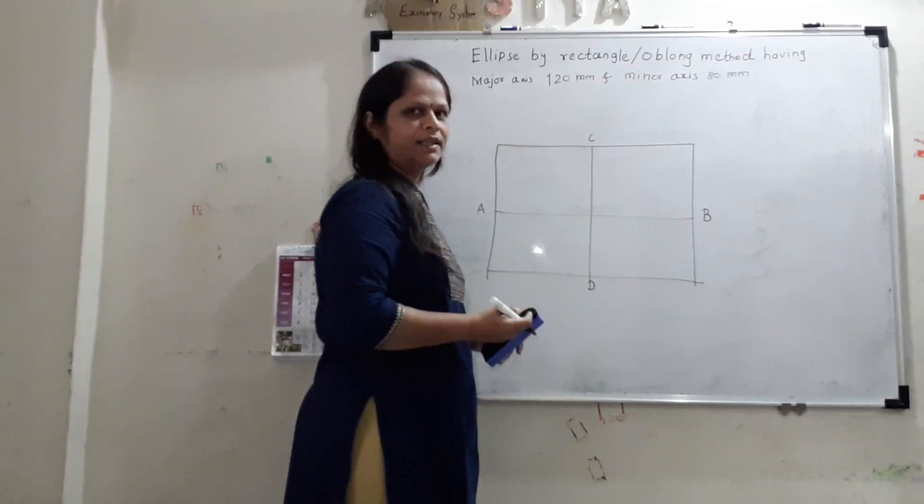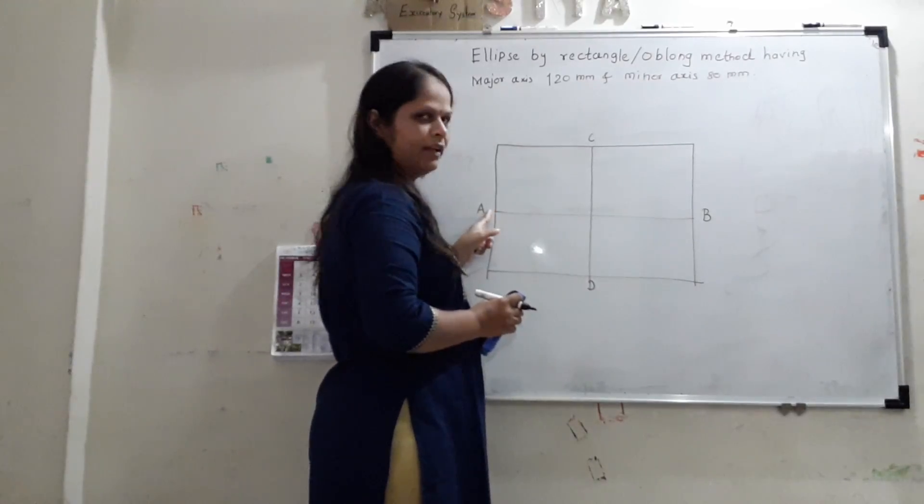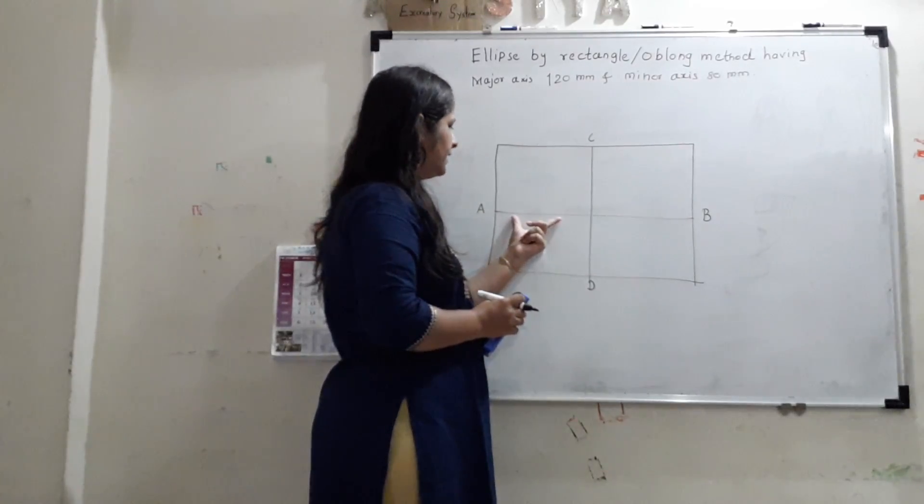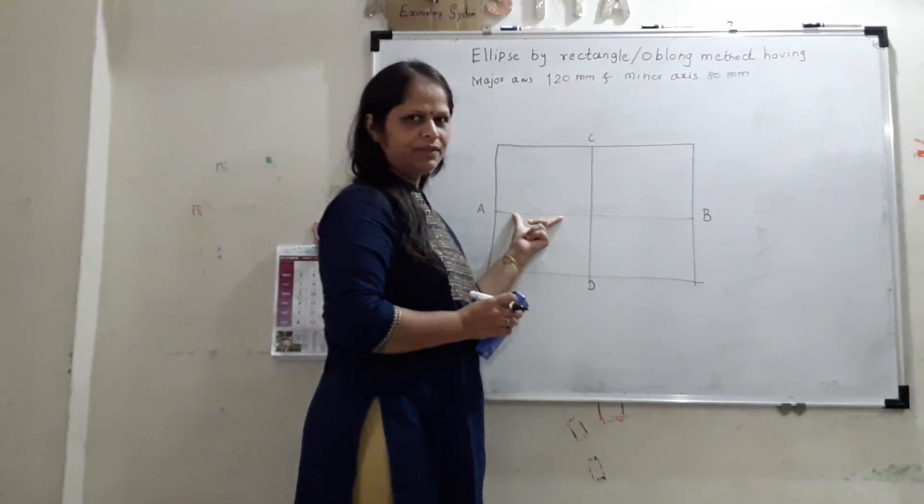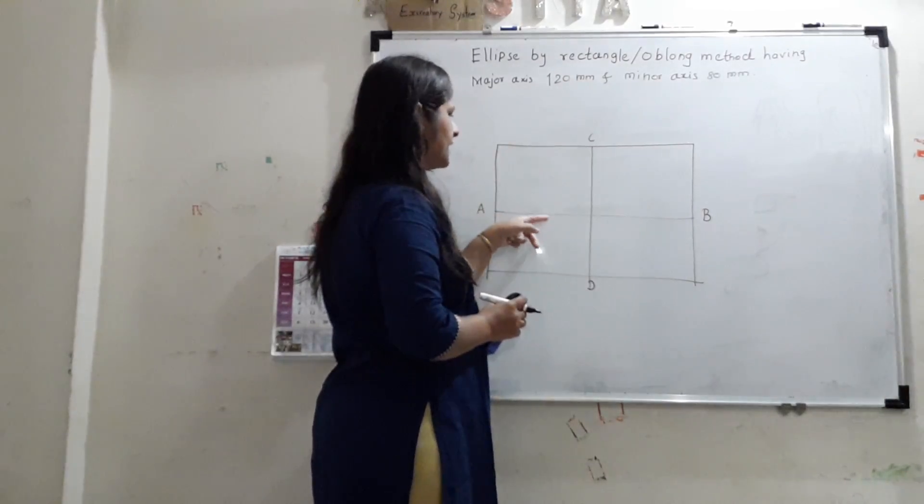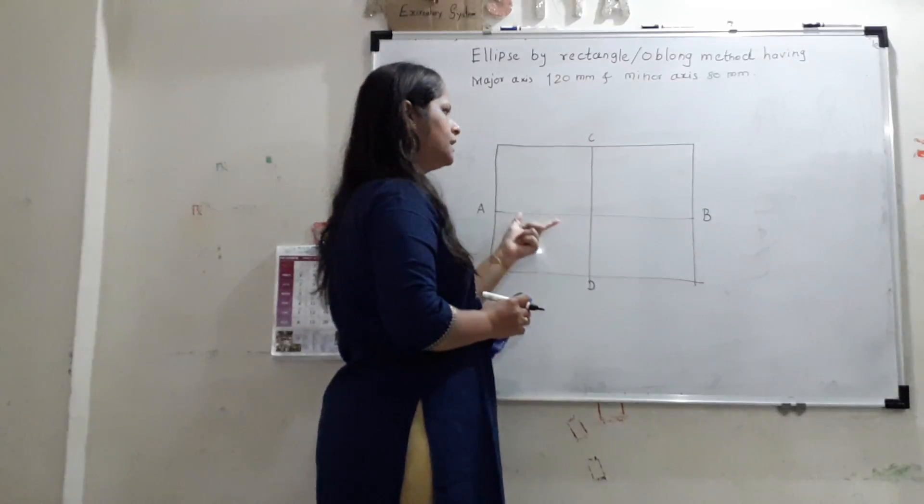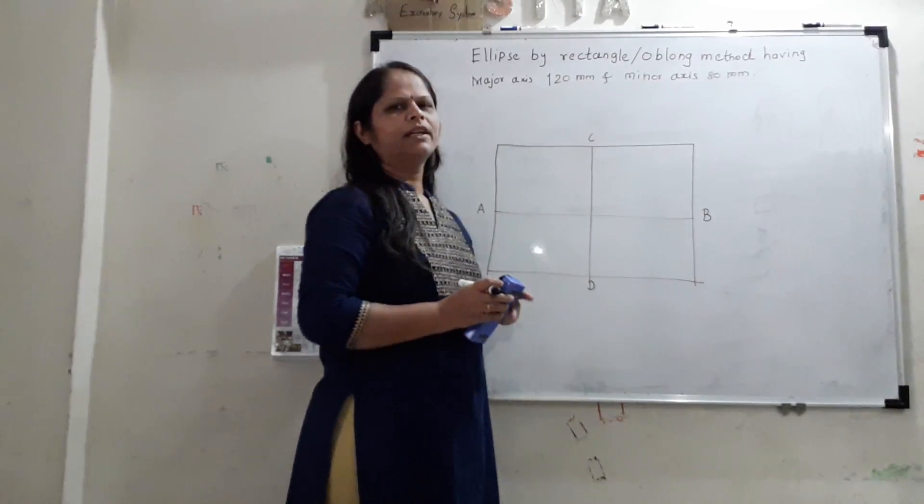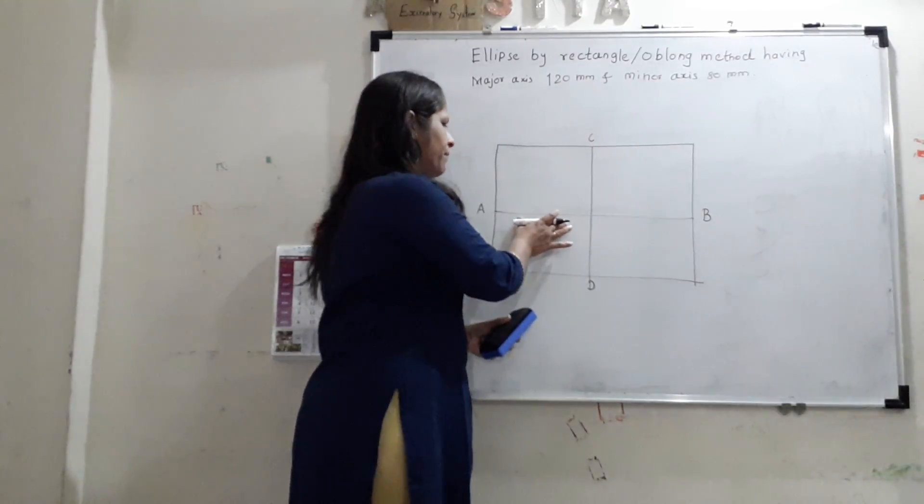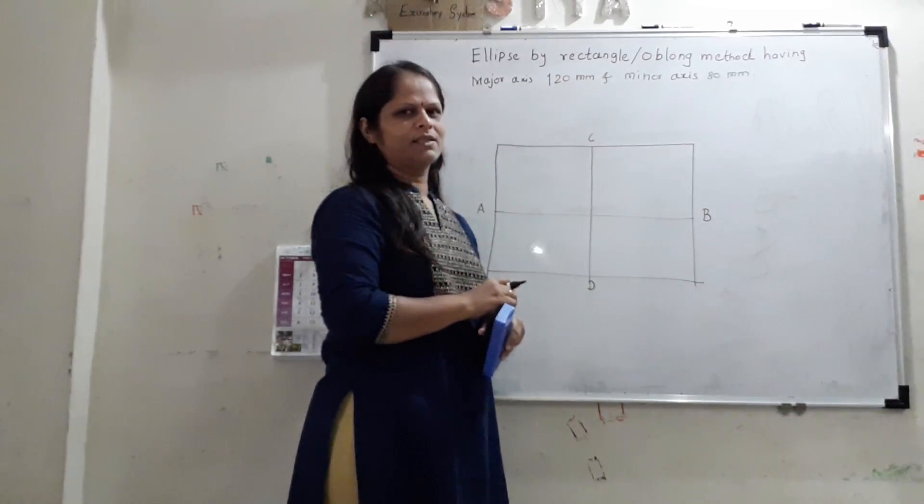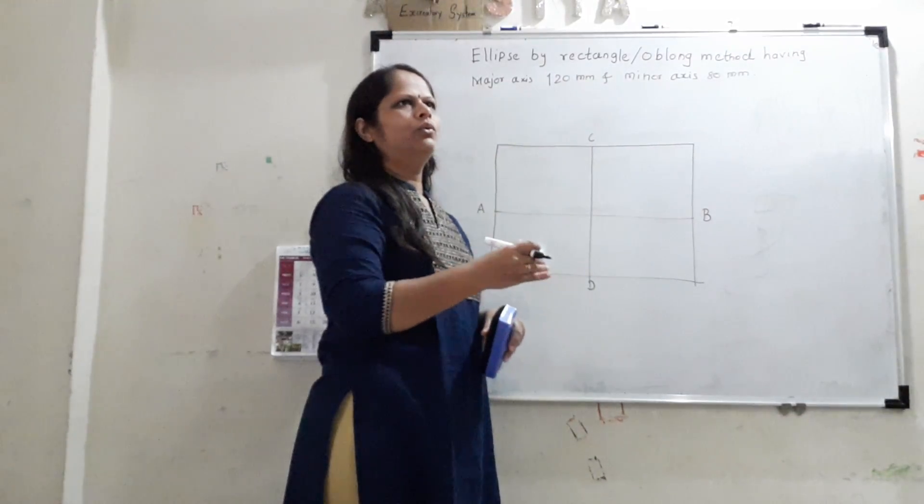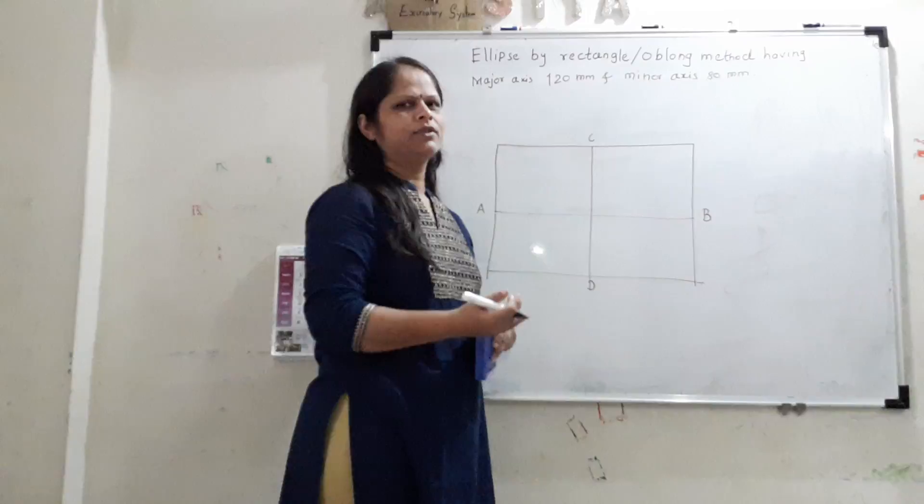Now, we will start with the construction. This is point A. We will divide this line segment in equal division. And with the same division, we will divide this line also. Let us say, in this particular, while solving this particular type, we have to divide this segment in at least four parts. Or, don't go more than four parts. That I would suggest.